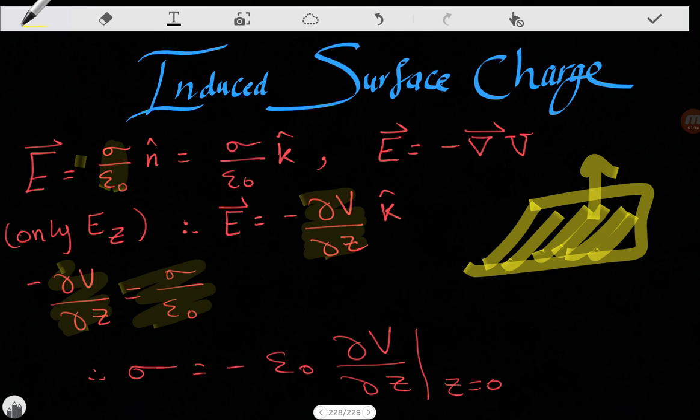And we can know that sigma, which is the charge density, is equal to minus epsilon naught partial V over partial z at z equals zero.